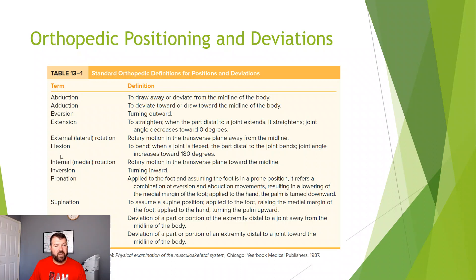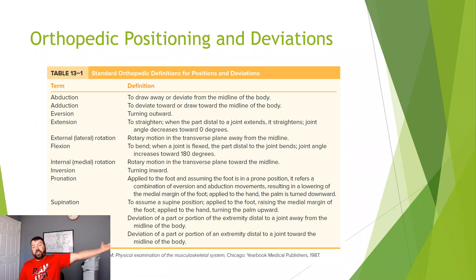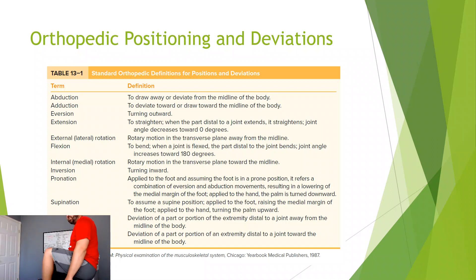Extension and flexion go hand in hand. Extension means to straighten — when a part distal to the joint extends, it straightens and the joint angle decreases towards zero degrees. Flexion is the bend — when a joint is flexed, the distal part bends and the joint angle decreases towards 180 degrees. For example at the elbow, this is elbow flexion and this is elbow extension. Same with the hip: hip flexion and hip extension, and with the knee: knee flexion and knee extension.